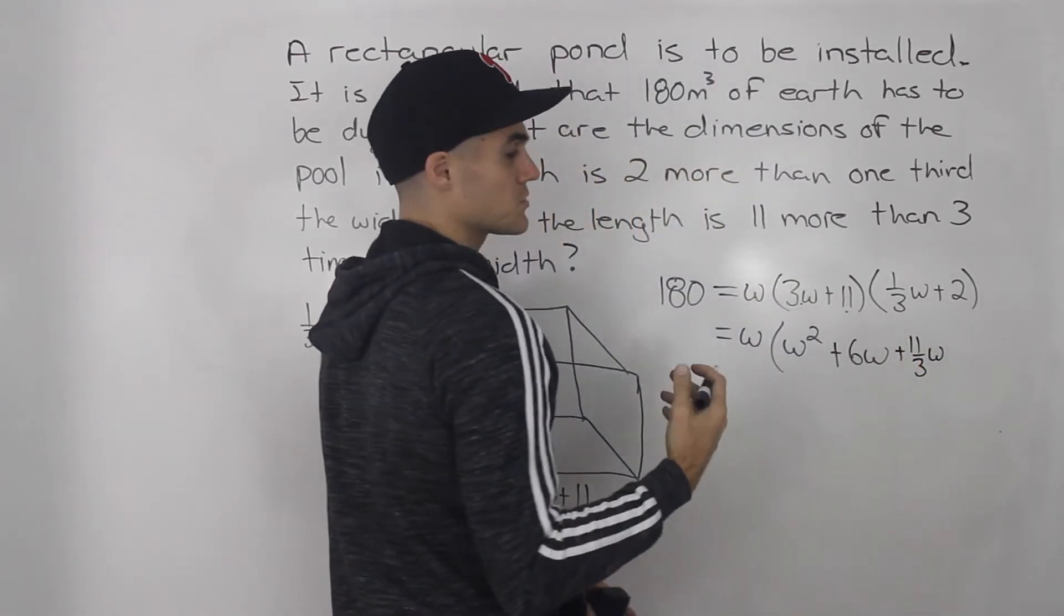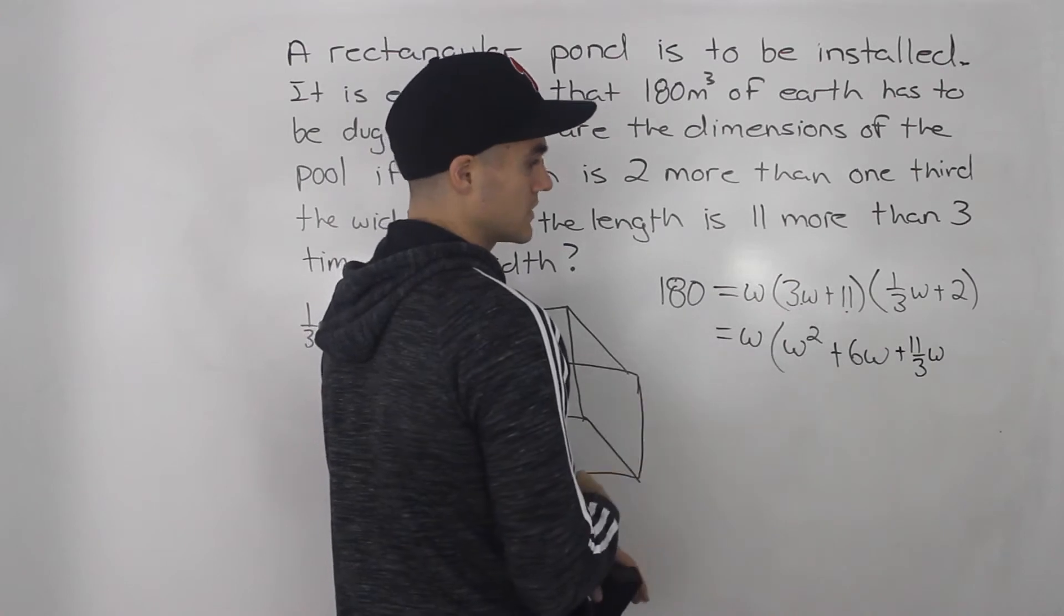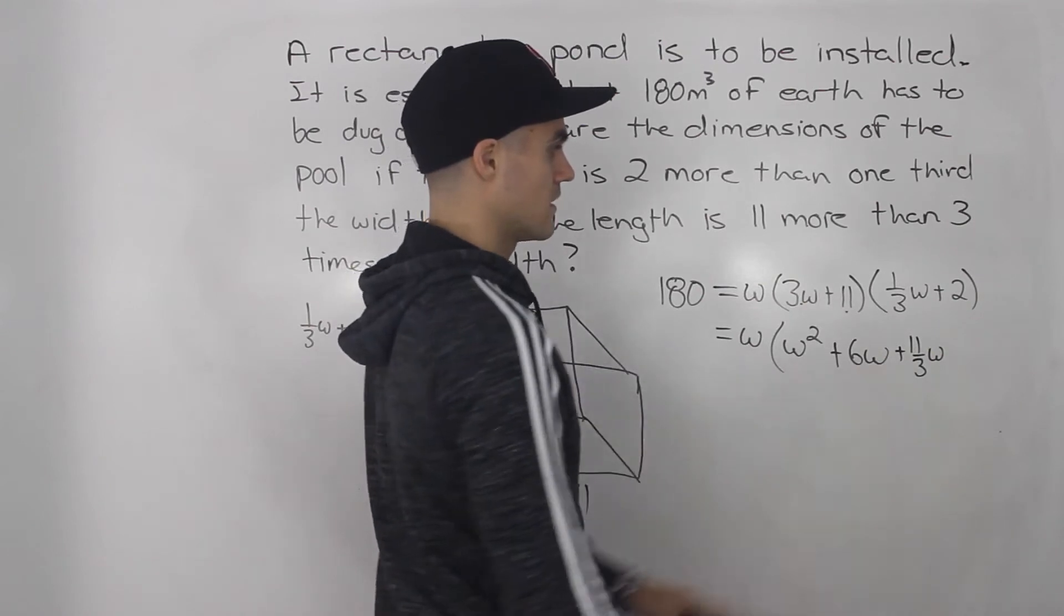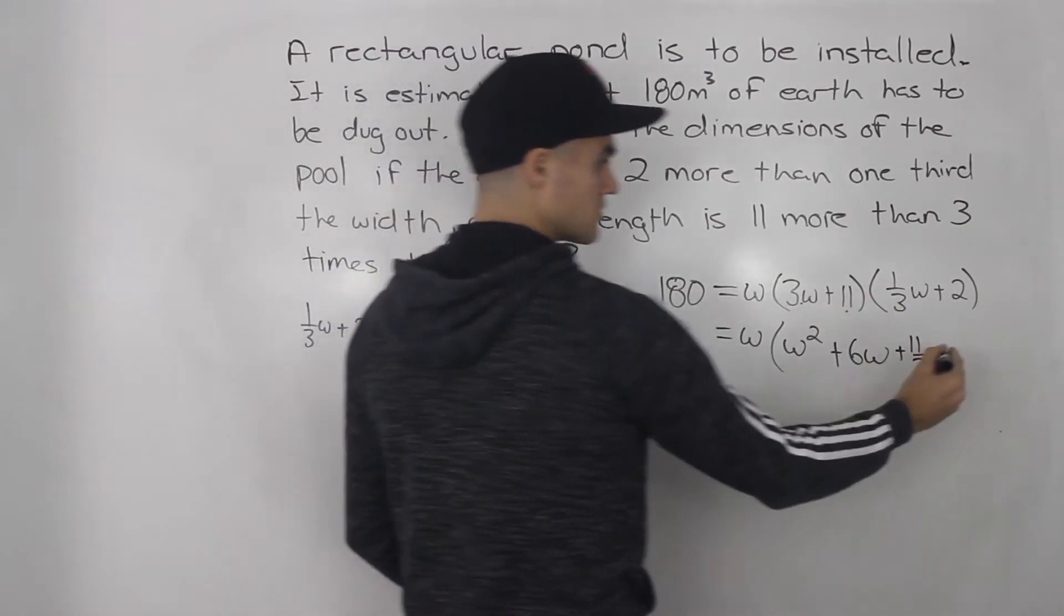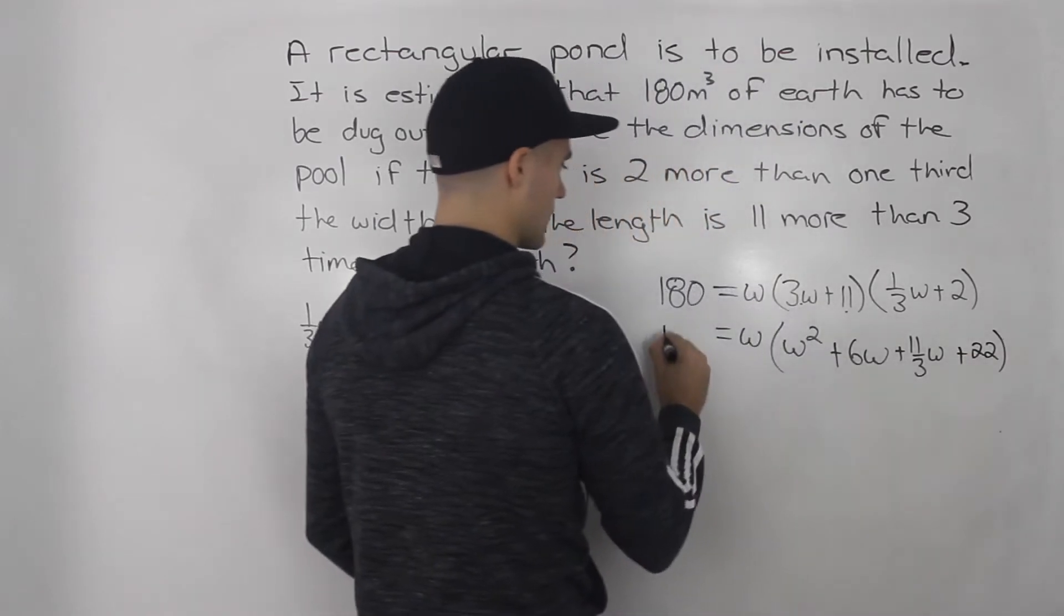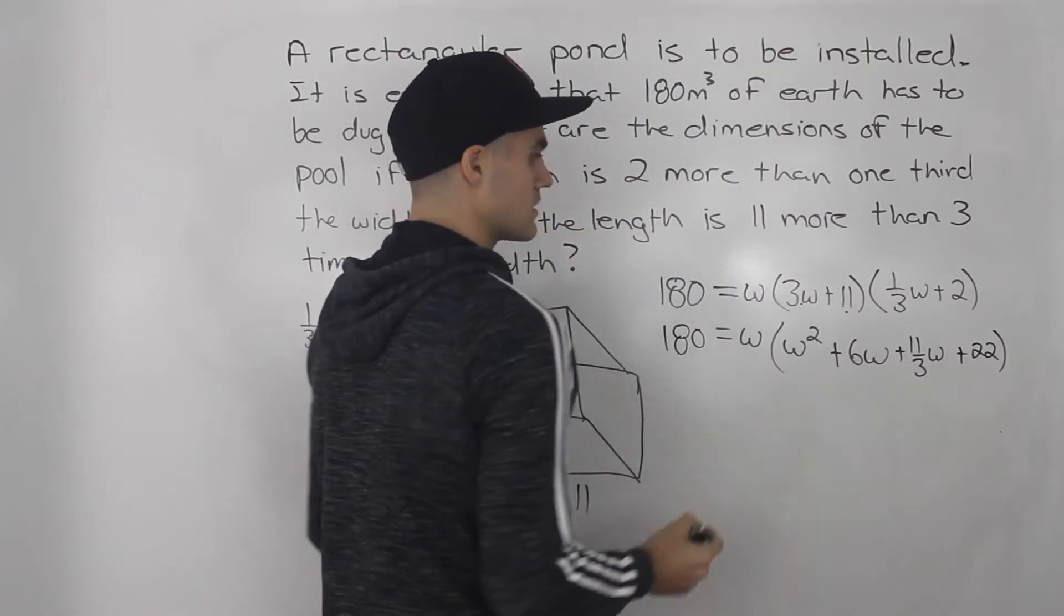Eleven times one over three w, that would give us 11 over three w. You don't want to use decimals here. Everything has to be pretty exact when we're finding these dimensions. So you want to use fractions. And then 11 times two, that would just give us 22.